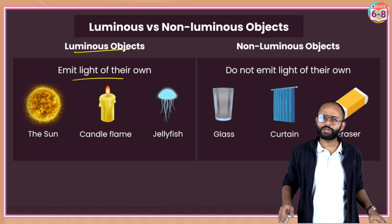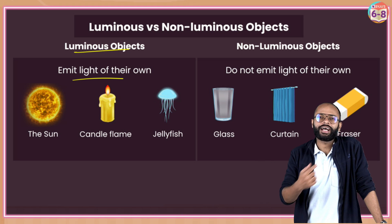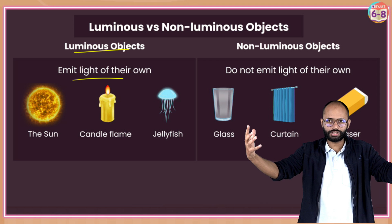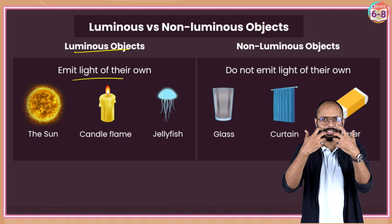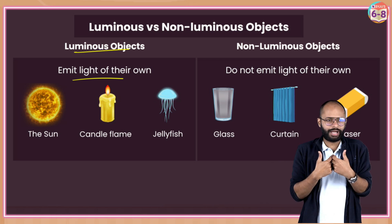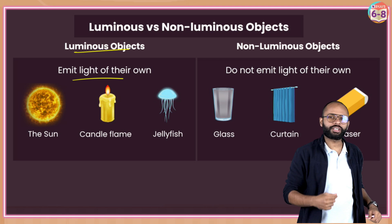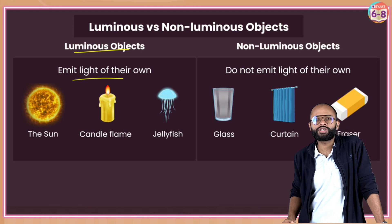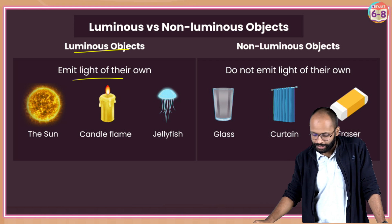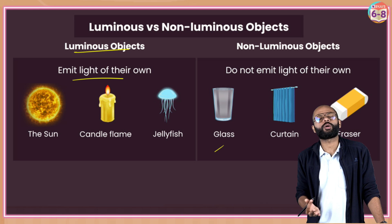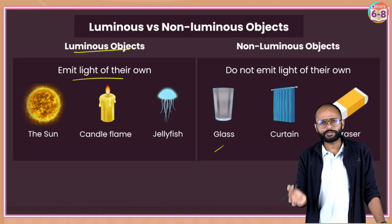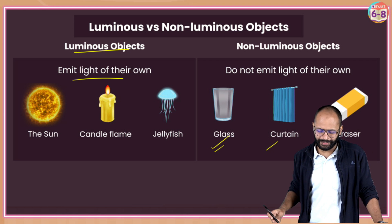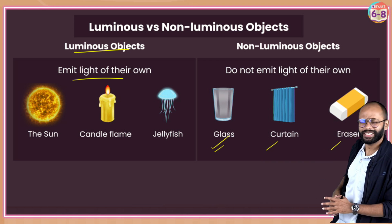What are non-luminous objects? I am a non-luminous object - I am not glowing. You can see me because light from these sources is falling on me, reflecting and then reaching to you. So I am a non-luminous object. When the question comes, write: objects which do not emit their own light. Most of the objects around you are non-luminous only - like glass, curtain, eraser. Non-luminous. Very easy.